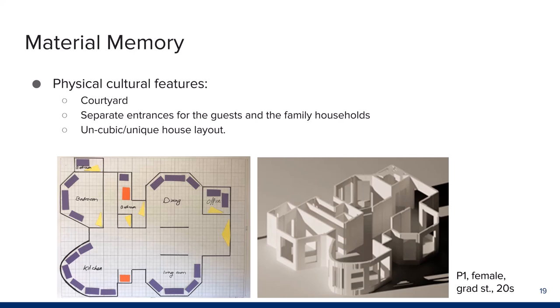Second, we examined the material memory dimension — the relationship between implemented layouts and the materiality of spaces participants have experienced. Several designs drew from traditional houses in participants' home countries, even though none had lived in such traditional configurations. These features included: first, a courtyard offering outdoor privacy or, if roofed, a central communal space; second, separate entrances for guests and family — one leading to the formal living room, the other opening to the kitchen or family spaces; and lastly, the concept of 'uncubism,' where a house has multiple edges, common in some Eastern cultures, as seen in a design by a graduate student participant.